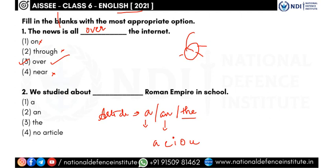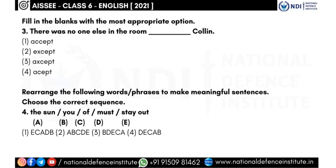So the answer is: 'We studied about the Roman Empire in school' — because Roman Empire refers to a place, and in that context we use the word 'the.' Let's move on to the third question.